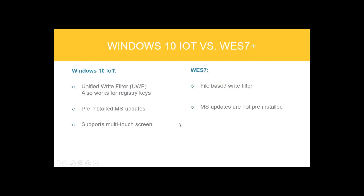Write protection is an important feature on a thin client. In the past we had a file-based write filter without any pre-installed Microsoft updates. Now we have a Unified Write Filter — not only the name has changed, but it also works for registry keys, and we have pre-installed Microsoft updates. The new version also supports multi-touch screens. The Unified Write Filter works as follows: deactivate it, install your apps or drivers, create a snapshot and deploy it, then activate the write filter again to have a protected system.